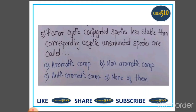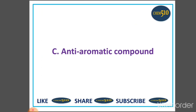Fifth question: Planar cyclic conjugated species whose resonance energy is less than that of corresponding acyclic unsaturated species are called — Option A: aromatic compound, B: non-aromatic compound, C: anti-aromatic compound, and D: none of these. This is the definition of anti-aromatic compound, so option C is correct.